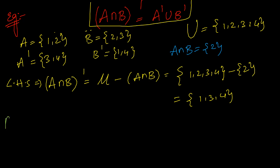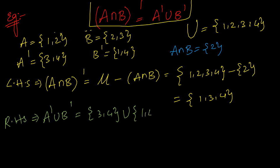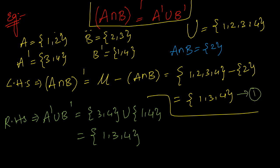For the right-hand side: A complement union B complement = {3,4} union {1,4} = {1, 3, 4}. So LHS = RHS = {1, 3, 4}. Hence the second De Morgan's law is verified.